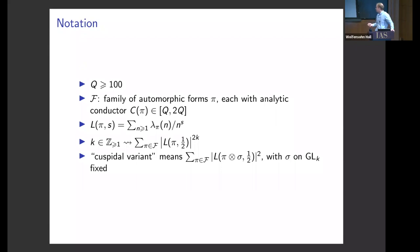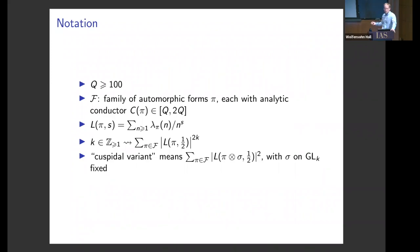We'll spend some time talking about integral moments. K will be the thing that appears in the exponent when we take the 2K-th moment. Occasionally when discussing the literature, I'll refer to the custodial variant of such a moment — that'll mean what you get by working with a custodial twist in a second moment where the custodial twist is on GL(K) and is fixed. If you take σ to be an Eisenstein series, you would recover the 2K-th moment.